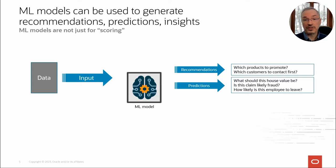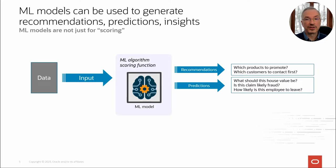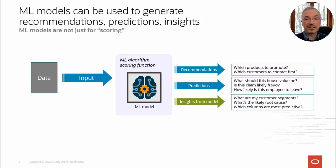You can make predictions such as what should this house value be, is this claim likely fraud, or how likely is this employee to leave. When generating recommendations and predictions, the model is one of the inputs to a machine learning scoring function along with the data. The model itself can also contain useful insights to address questions like how do I define my customer segments, what are the likely root causes of equipment failures, or which features in my data are most predictive — and these insights can be surfaced in applications and dashboards.